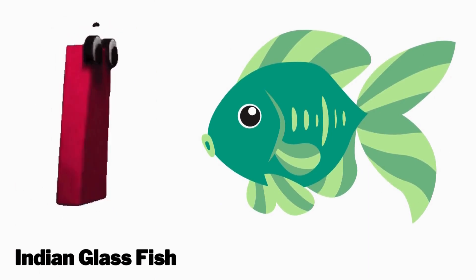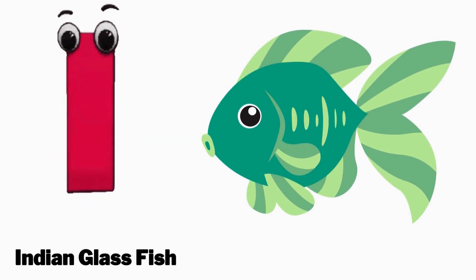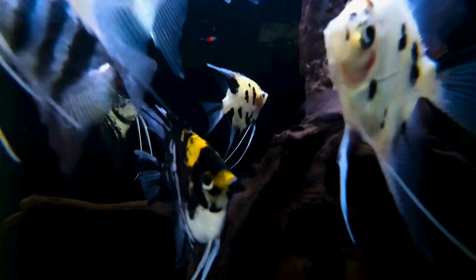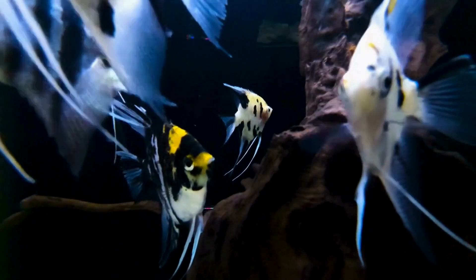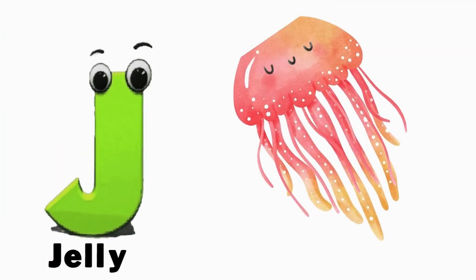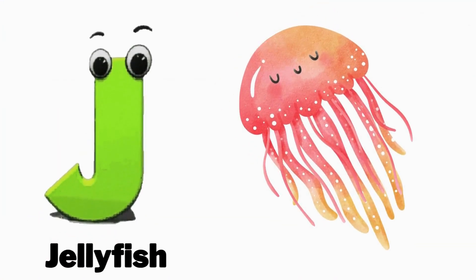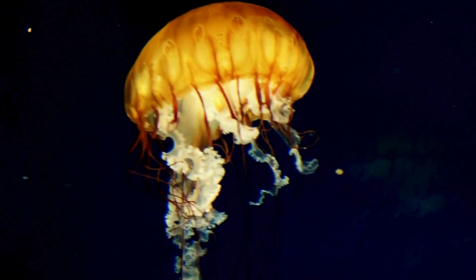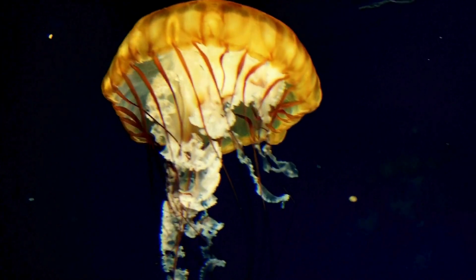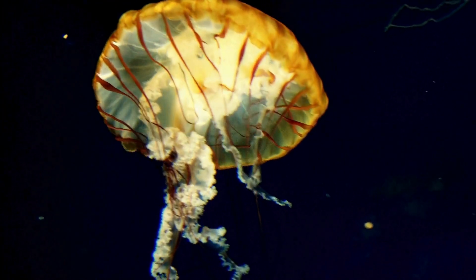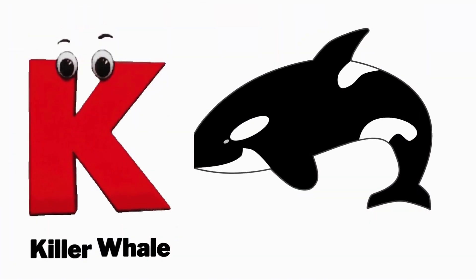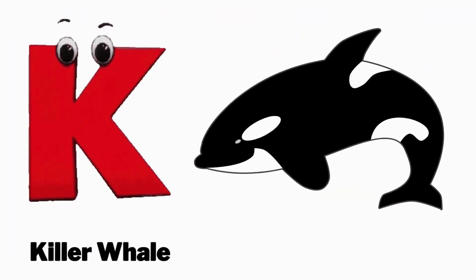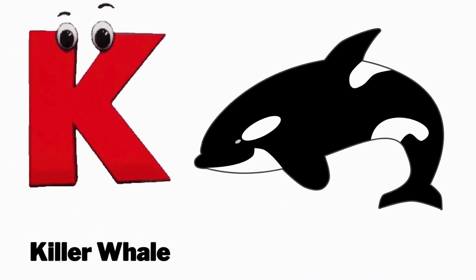I is for Indian glass fish, E, Indian glass fish. J is for jellyfish, J, J, jellyfish.